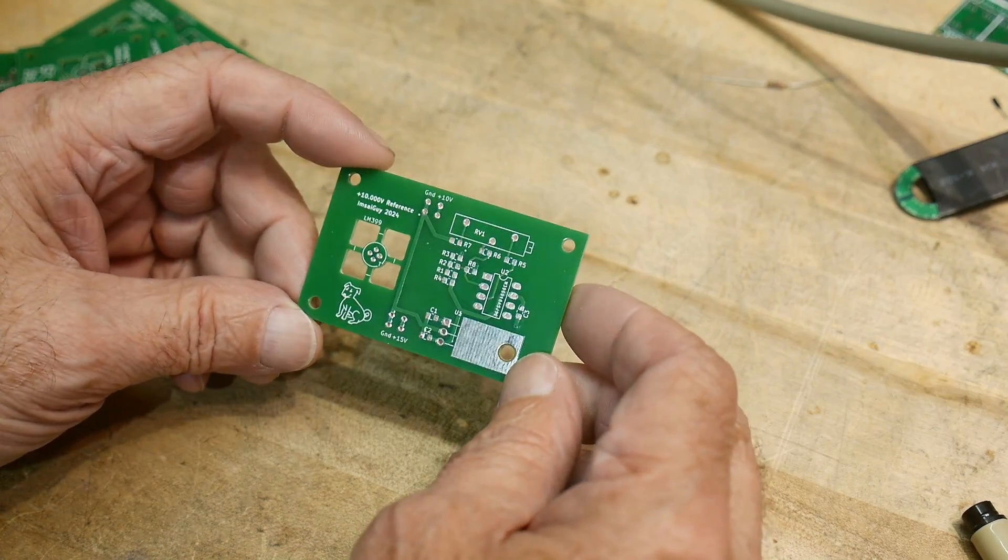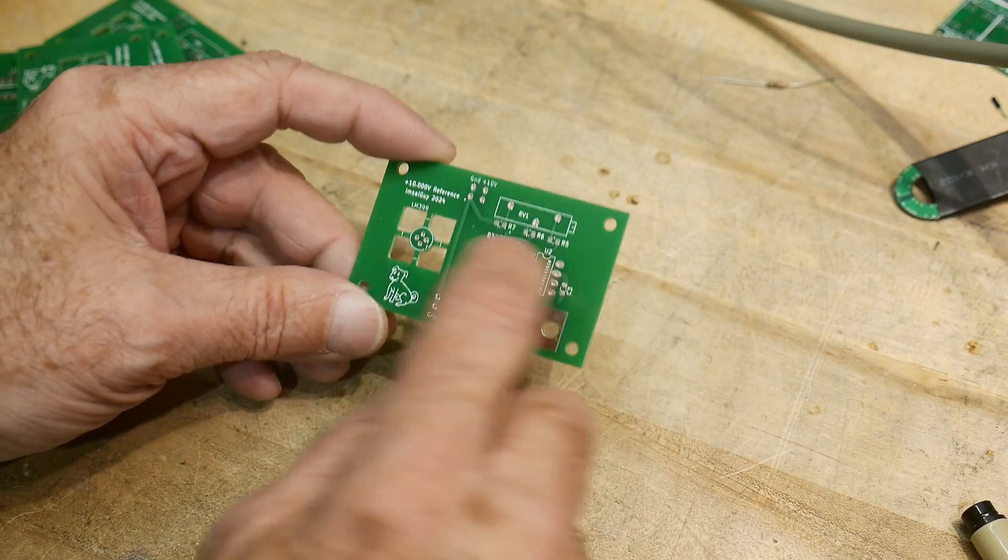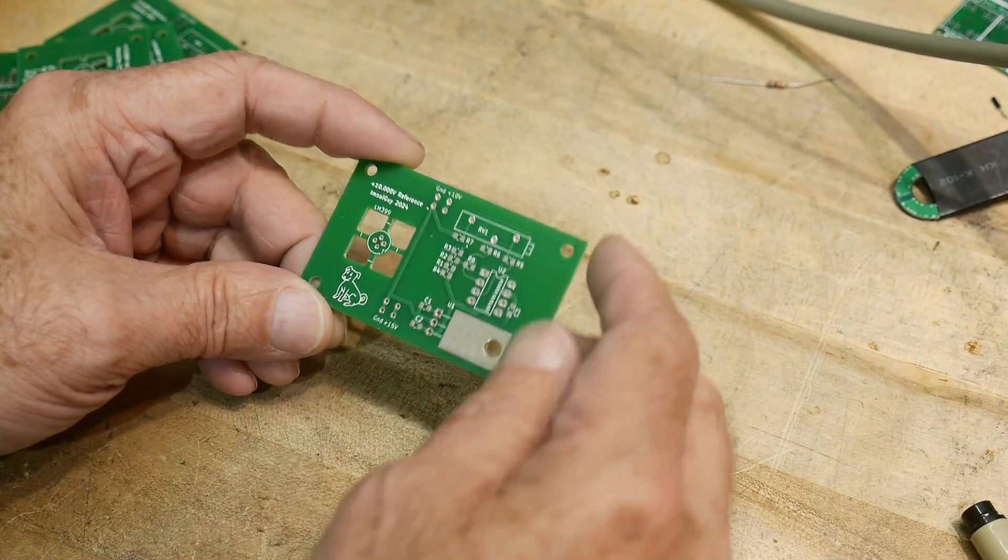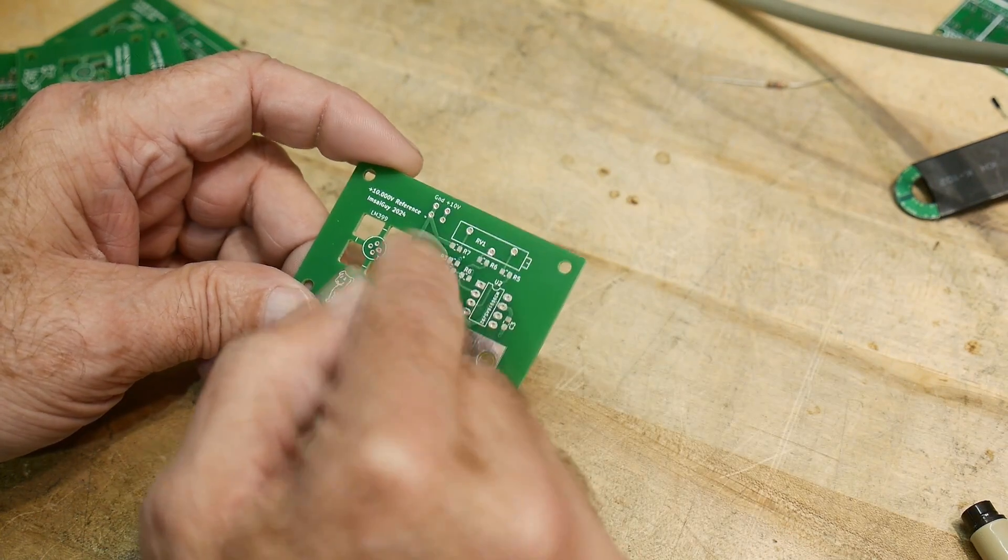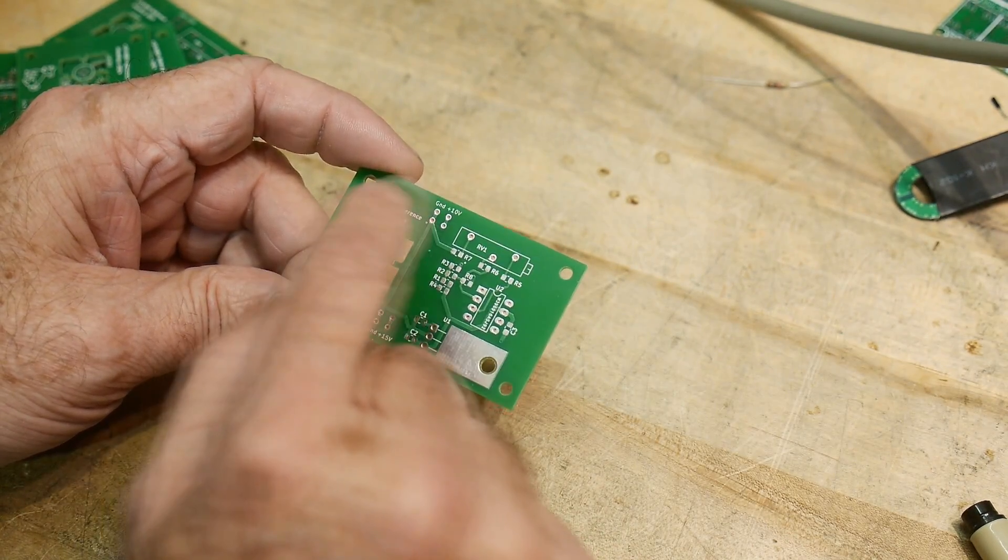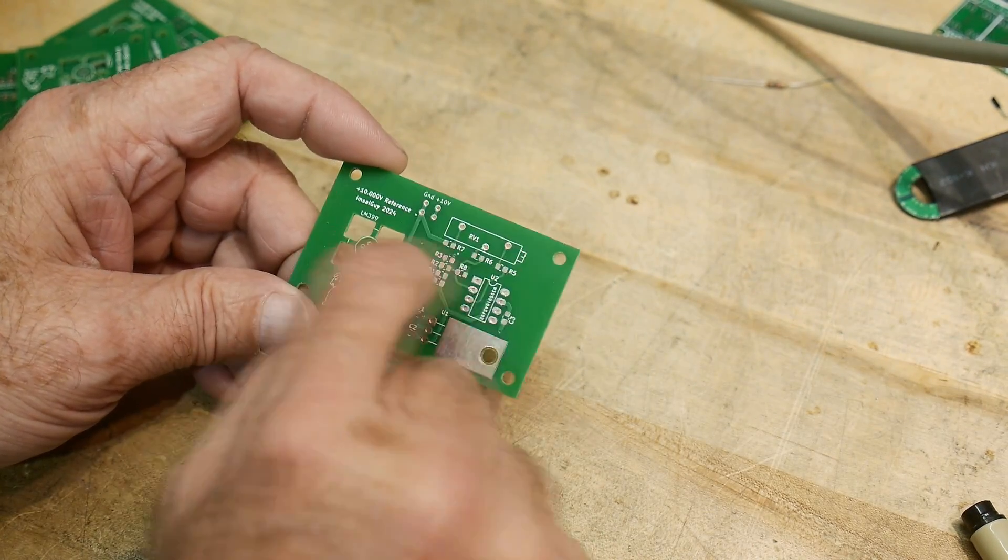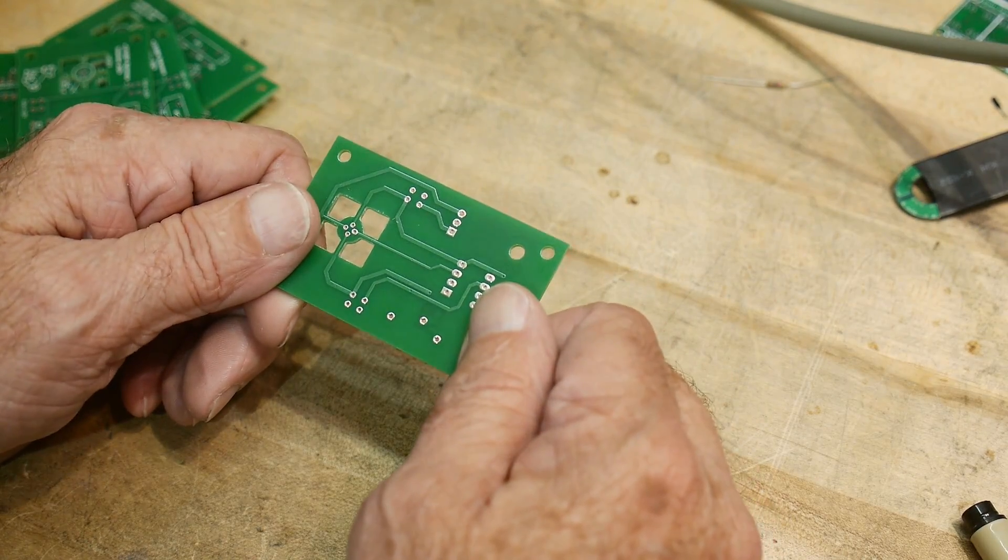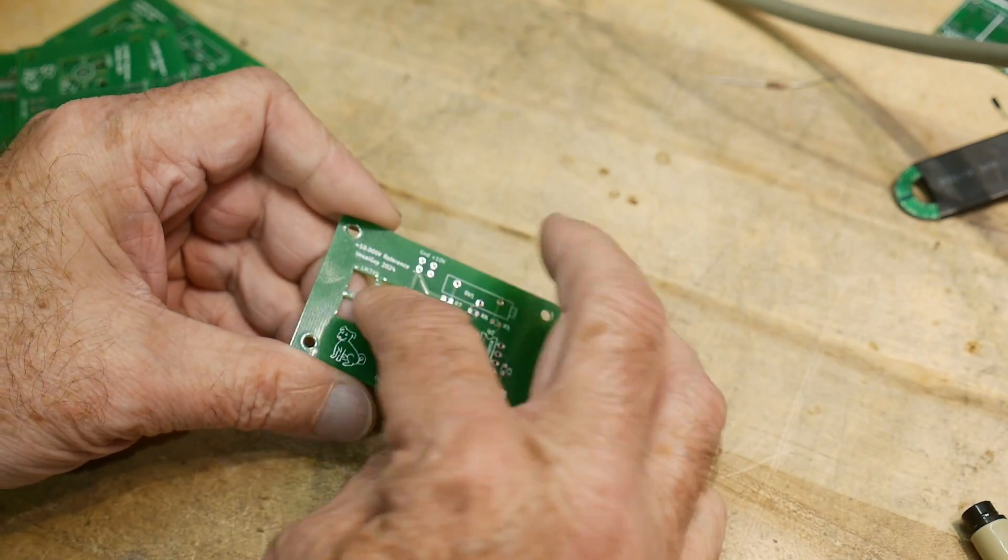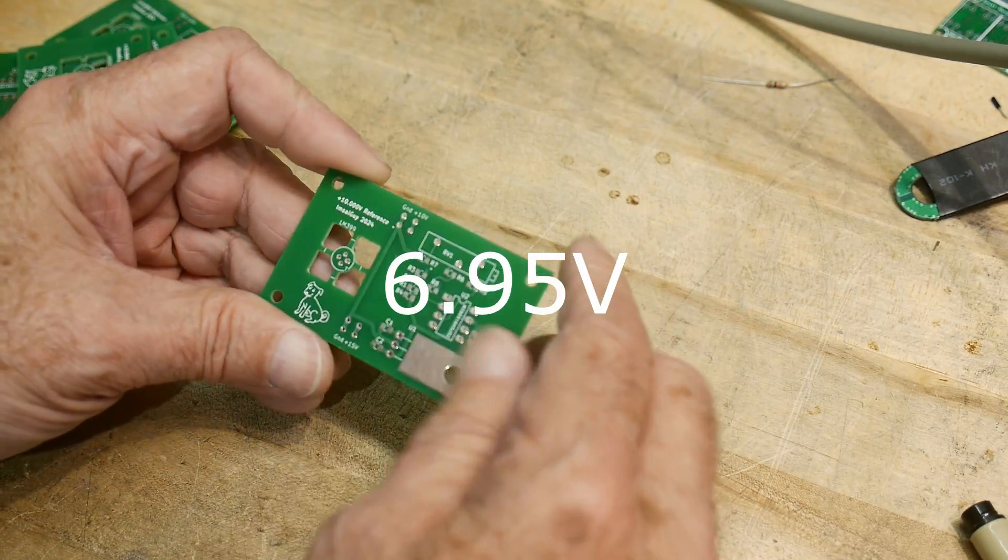You can nitpick this board, but it is an LM399 and some associated circuitry. You can amplify the seven point whatever volts this thing is to 10 volts and get 10 volts out of it. Actually, I don't remember the voltage of these things exactly.